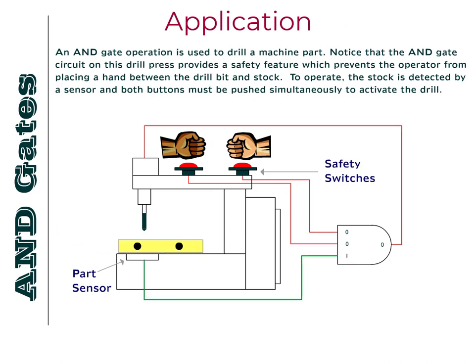Finally, an AND gate operation is used to drill a machine part. Notice that the AND gate circuit on this drill press provides a safety feature which prevents the operator from placing a hand between the drill bit and stock. To operate, the stock is detected by a sensor, and both buttons must be pushed simultaneously to activate the drill.